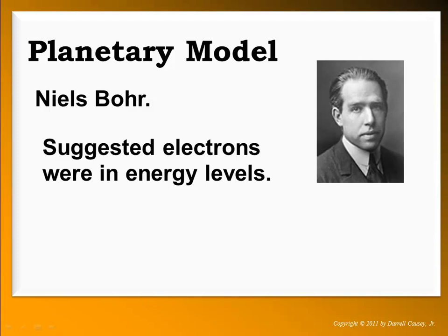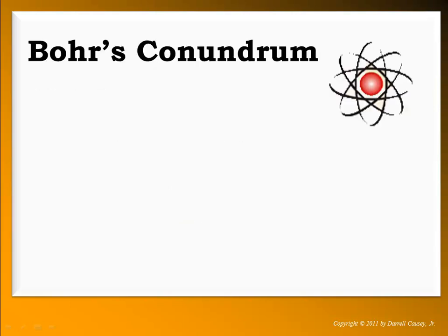Some things didn't make sense, and the whole reason that we took time to study about light is that Niels Bohr took the ideas of the line spectra by Kirchhoff and Bunsen, took the ideas of quantum theory, and also used the ideas of Albert Einstein. It came up with this new idea called the planetary model. He called his energy levels orbits, and it basically came out of what I call Bohr's conundrum.